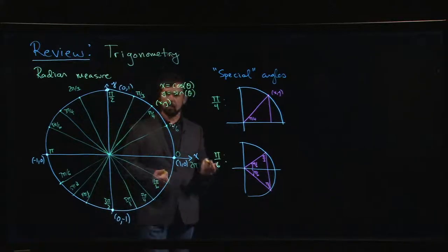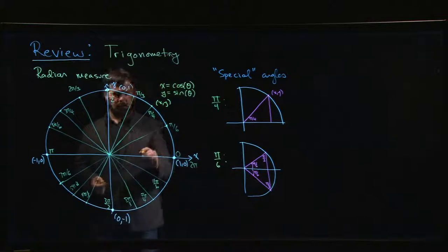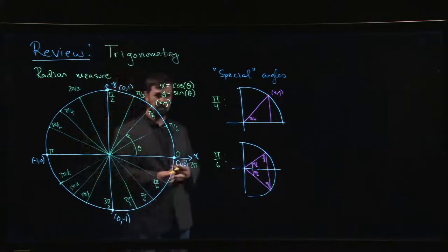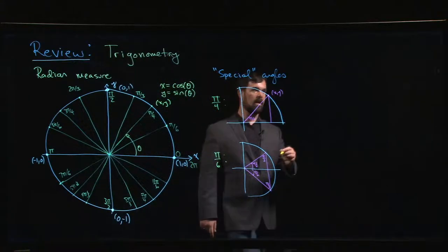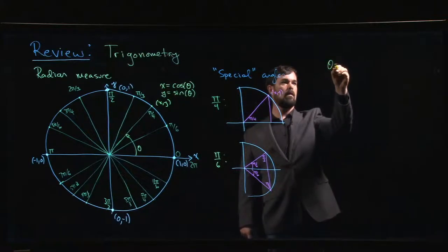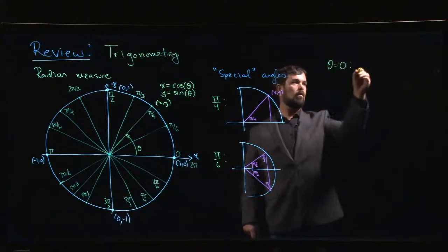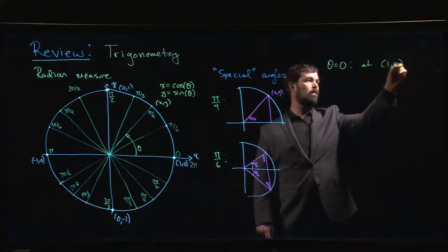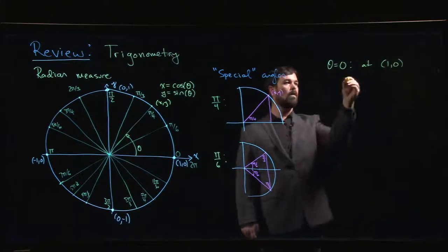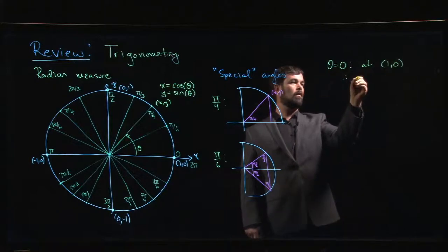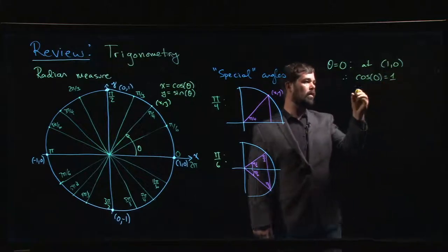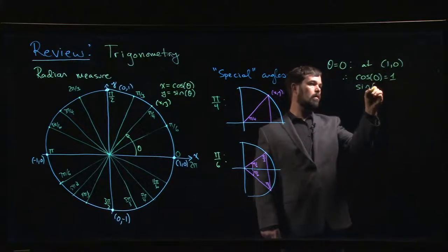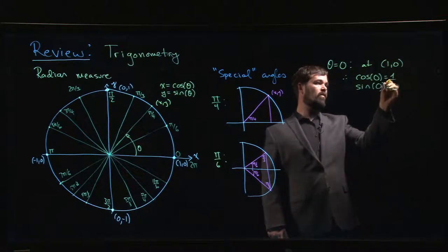That's how sine and cosine are defined, as the coordinates where theta is this angle measured from the positive x-axis. So when theta is equal to 0, we can see that we're at the point (1,0). That means that cosine of 0 is 1 and sine of 0 is 0.